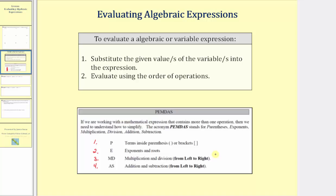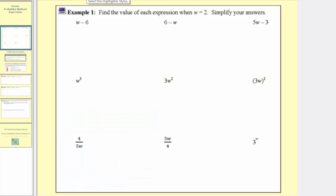Let's look at some examples. We want to evaluate all the given expressions when w equals two, which means for each expression we're going to substitute or replace w with two. So the expression w minus six is equal to two minus six when w equals two, and two minus six equals negative four.